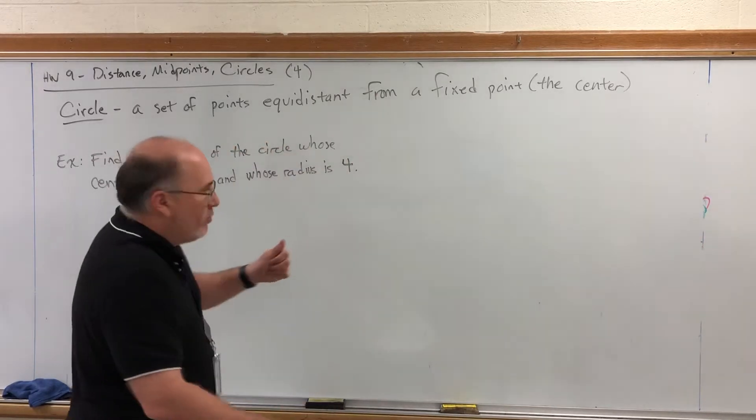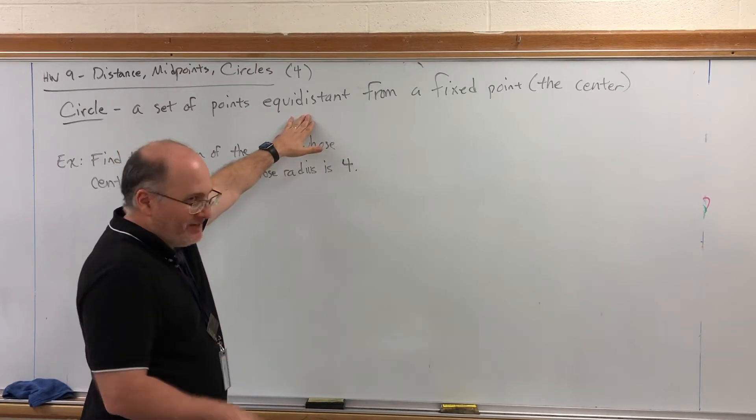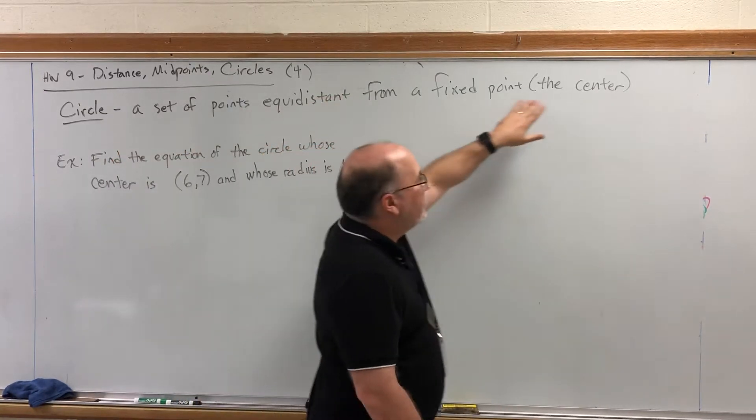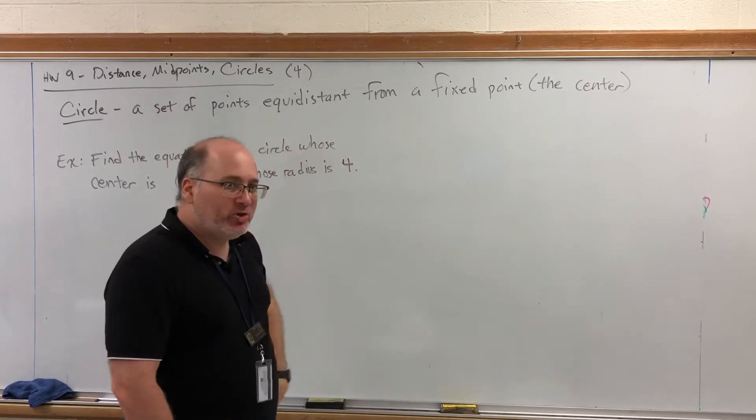in so many words, is a set of points that are equidistant, meaning the same distance from a fixed point. That fixed point is called the center. That distance from the center is called the radius.